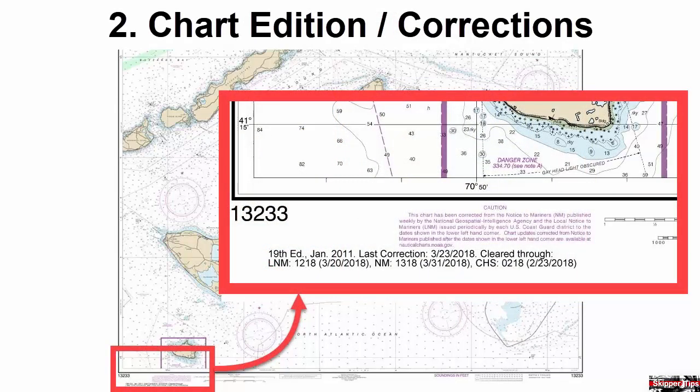Look in the lower left corner of your chart for the chart number, addition, addition date, and chart correction data. Our chart of Martha's Vineyard is 13233, the 19th edition, issued in January of 2011. The last Notice to Mariners correction was on March 23, 2018, and this chart has been checked or cleared through Coast Guard Local Notice 12/18, Weekly Notice to Mariners 13/18, and the Canadian Hydrographic Service Notice 02/18.